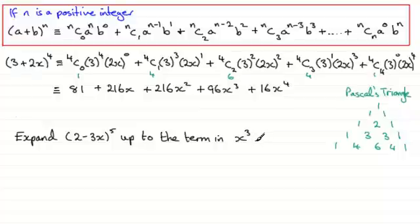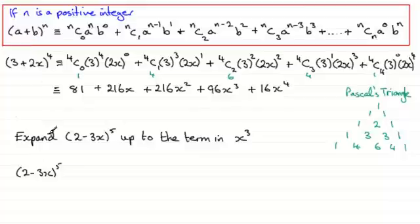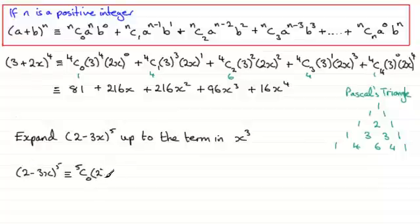Welcome back. So let's put down (2 − 3x) all to the power 5. With this one, a is going to be 2, and b is going to be minus 3x, and n is the positive integer 5. So according to the formula, it's going to be 5C0, then we've got the a value which is 2, to the power n which is 5, and then b which is (−3x) to the power 0.